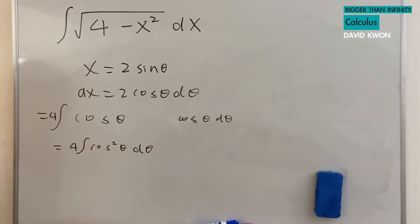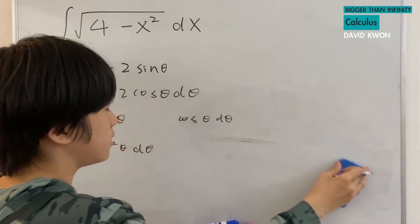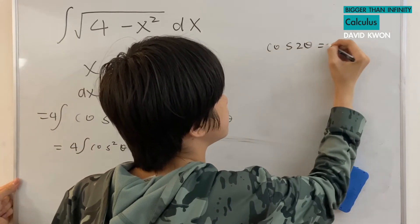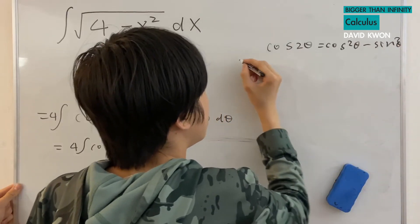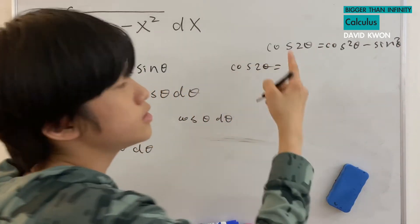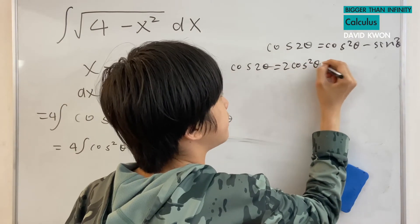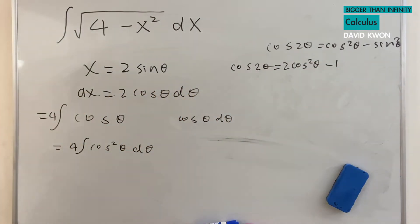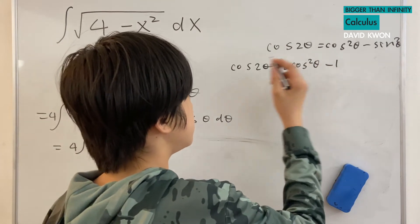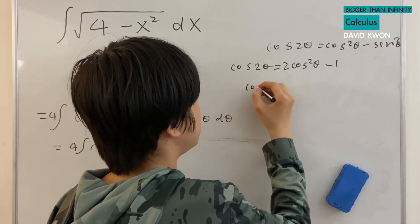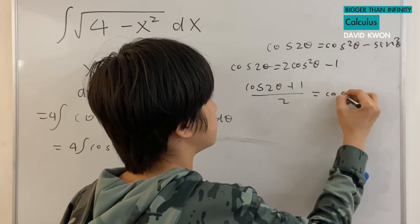Now from cos squared theta, if we want to integrate that, we need to use the identity where cos 2 theta is equal to cos squared theta minus sin squared theta. And since sin squared theta is 1 minus cos squared theta, that means cos 2 theta equals 2 times cos squared theta minus 1. And if we want cos squared theta alone, we plus 1 and divide by 2 on both sides, giving us cos 2 theta plus 1 over 2 equals cos squared theta.